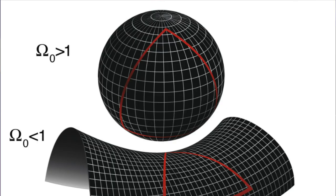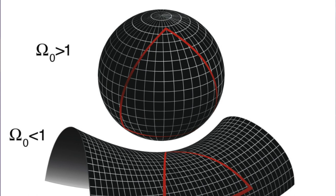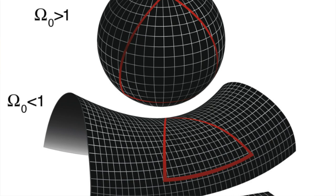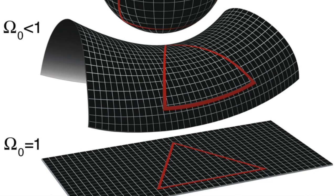Today, the shape of the universe is a topic of great debate, with three leading theories: the universe has a positive curvature, which can make it spherical; the universe has a negative curvature, which gives it a saddle shape; or the universe is completely flat. The jury is still out. Regardless, the circle has been a sacred shape to many ancient religions.